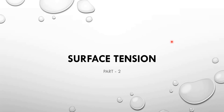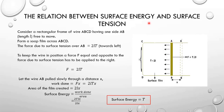Hi everyone, we have already discussed about surface tension and surface energy. Now we are going to find a relation between surface energy and surface tension. For that, consider a rectangular frame ABCD where one of its sides AB is free to move. Assume that there is a soap film across the frame ABCD.